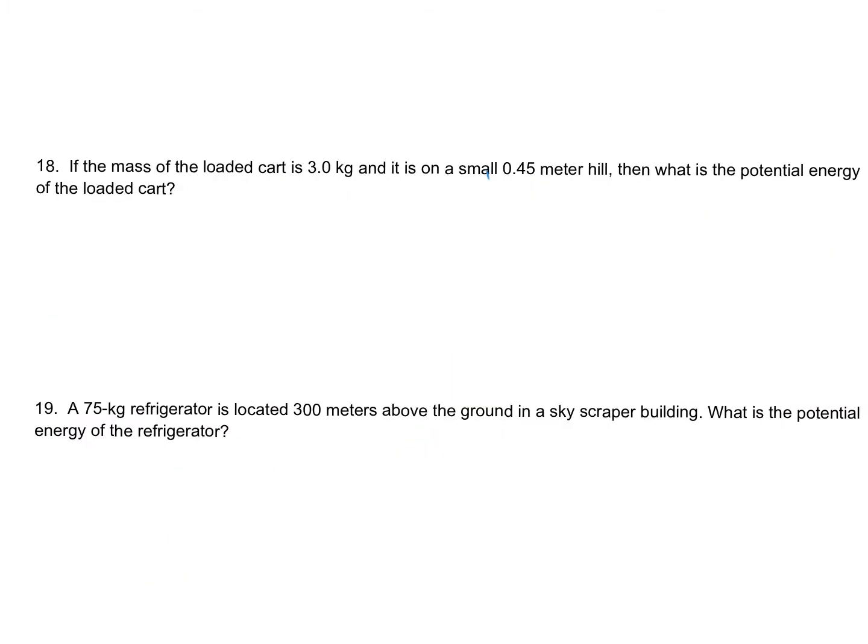All right? If we skip to number 18, you'll see that it says if the mass of a loaded cart is 3 kilograms, that is our mass given to us. And it's on a small hill. So if it's on a hill, that means it's off the ground. So that's going to be my H for height. What is its potential energy? So I think that's what we're looking for is potential energy. All right. We know that since this cart is above the ground, it has stored up energy that if you let go, it might roll down a hill or fall. And that would convert into other energies like kinetic energy. So potential energy is just stored up energy. But what's given to us is simple. For example, we've got 3 kilograms.